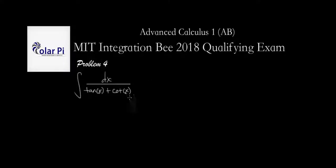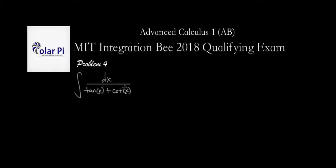Hey guys, welcome. So problem four here, and this is a pretty straightforward problem. One approach is to turn this cotangent into one over tangent and then move forward from there. Another approach is to change this tangent into sine over cosine, and therefore change cotangent into cosine over sine. I'm going to prefer the latter of the two approaches, so I'm going to turn stuff into sine and cosine.